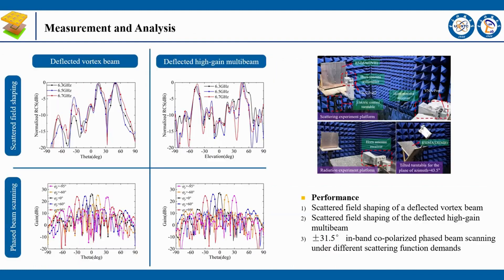Finally, in both simulations and experiments, by using different SCMS layouts, the ARCEMA array shaped the scattered fields into a deflected vortex beam and a deflected high-gain multi-beam. Moreover, the ARCEMA maintains in-band co-polarized phased beam scanning from +31.5 degrees to −31.5 degrees under different scattering function demands.